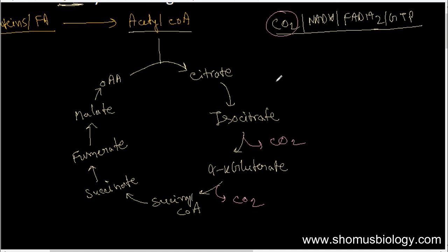Now, regarding NADH and FADH2 — throughout the cycle there are many stages catalyzed by dehydrogenase enzymes, meaning those are redox reactions. Wherever there is a dehydrogenase enzyme, it involves NAD or FAD, producing NADH or FADH2. Let's see exactly where these are produced.